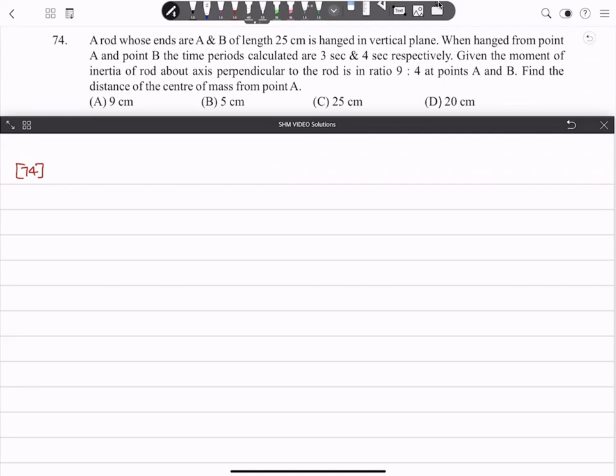Given the moment of inertia of rod about an axis perpendicular to the rod is in the ratio 9 to 4 about points A and B. Find the distance of center of mass from point A.